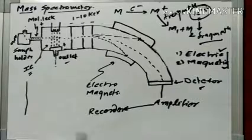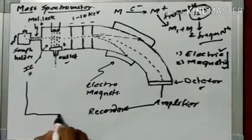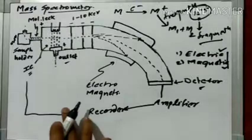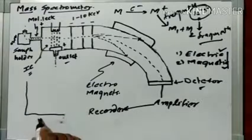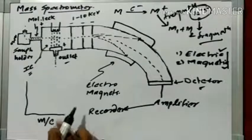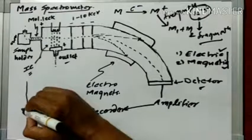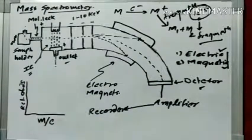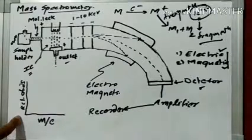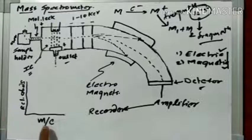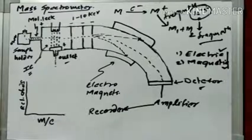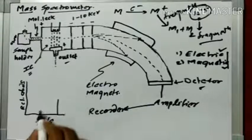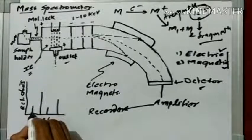In the mass spectrum, the y-axis represents relative abundance, and the x-axis represents m/e — the mass-to-charge ratio. The mass spectra are plotted as relative abundance against m/e, which is generally called m by e. From this plot, we get peaks of different types corresponding to the detected ions.